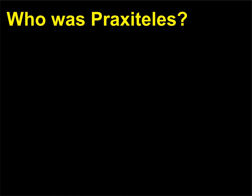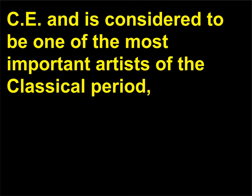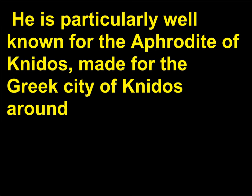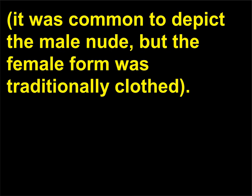Who was Praxiteles? Praxiteles was a Greek sculptor who worked in Athens during the 4th century BCE and is considered one of the most important artists of the Classical period, along with sculptors Skopas and Lysippos. He is particularly well known for the Aphrodite of Cnidus, made for the Greek city of Cnidus around 350 BCE. It is thought to be the first time an artist produced a monumental female sculpture fully nude; while it was common to depict the male nude, the female form was traditionally clothed.